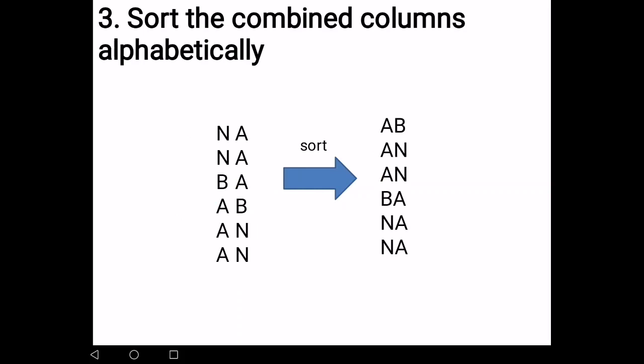Then, you sort the combined columns alphabetically. You sort this into AB, AN, AN, BA, NA, NA. Now, after sorting...